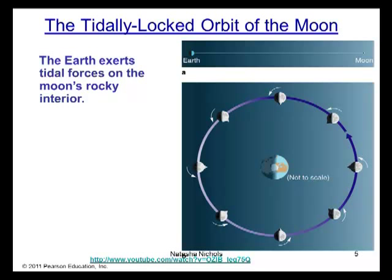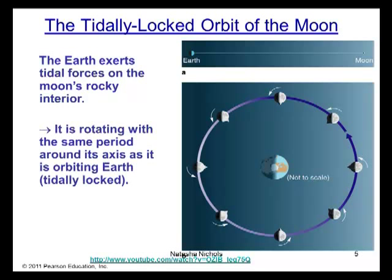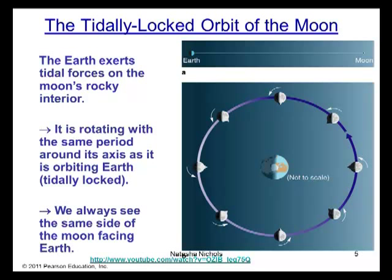Now, the Moon is tidally locked in orbit with the Earth. And that happens because the Earth exerts tidal forces on the Moon's rocky interior. As a result, the Moon ends up rotating with the same period around its own axis as it is orbiting around the Earth. That is what tidally locked means. And as a result for us, we always end up seeing the same side of the Moon. I did put another link to a YouTube website on the bottom that shows a very nice animation on how this takes place.